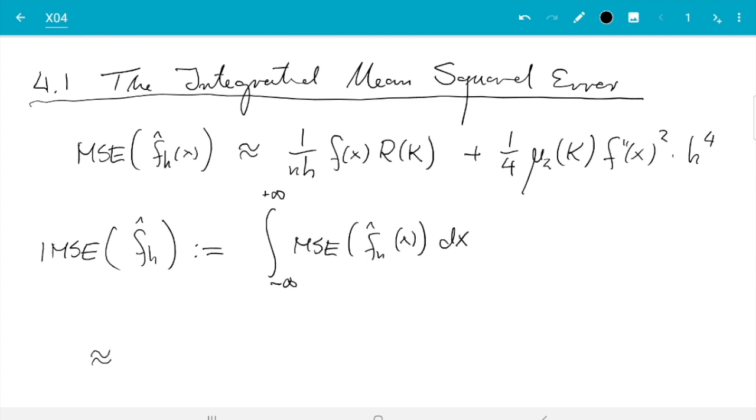And that's the quantity one considers and there is really not much to that. So what we do is we just integrate the formula I've just written. So we do integral 1 over nh f of x roughness of k plus one quarter second moment of k f double prime of x squared times h to the 4 dx. And now the main observation is very many of these terms do not actually depend on x.